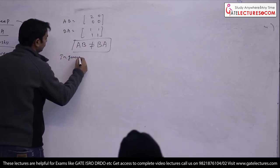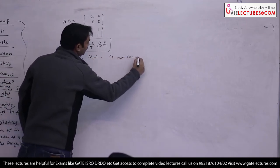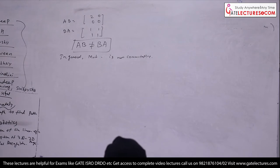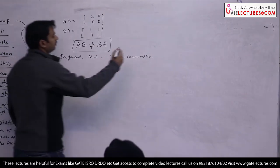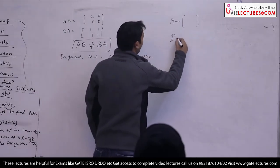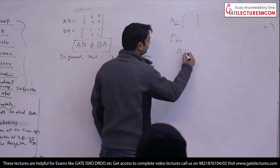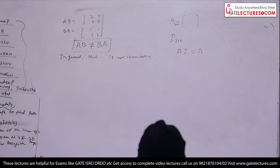In general, AB not equal to BA — this is one counter example of A and B. What about if A is a square matrix and you multiply by I? What is A times I? It is nothing but A. No problem — that is another thing.